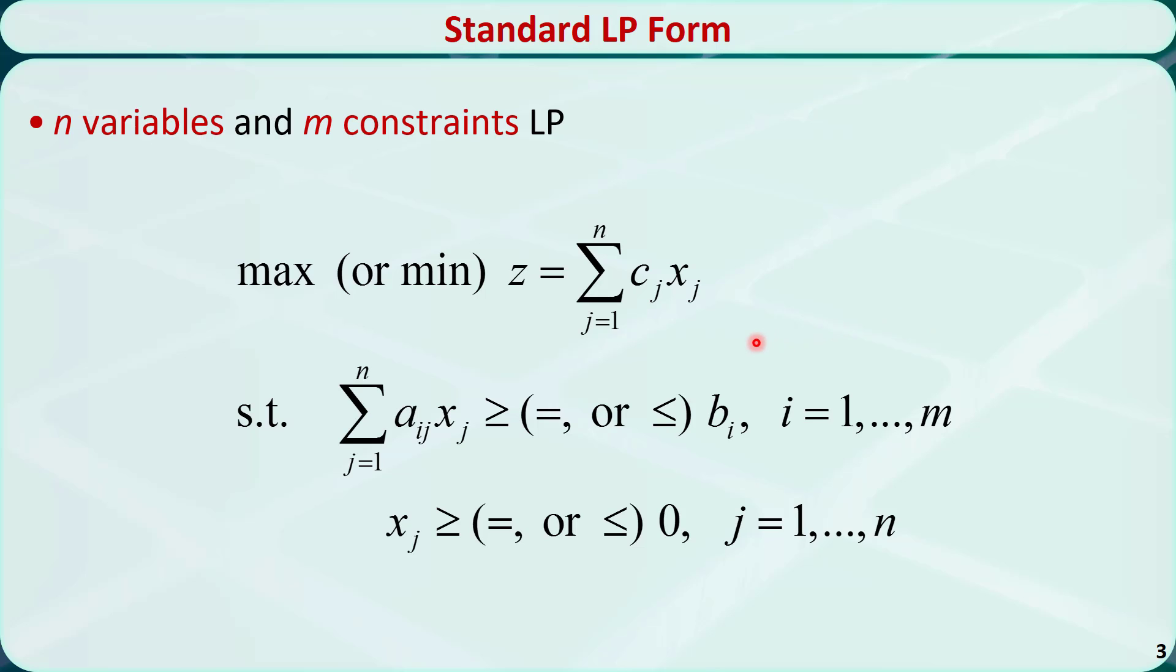We can rewrite the standard form in a more compact way like this. The parameters are the objective function coefficient cj, the constraints coefficient aij, and the right-hand side bi. We will try to separate these coefficients and put their values in the data file.